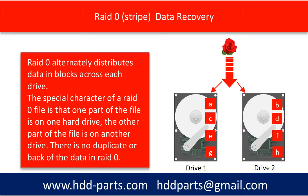The data is an image — it's the flower. The RAID 0 alternately distributes the image data in blocks like A, B, C, D, E, F, G, H across the two hard drives, drive one and drive two.